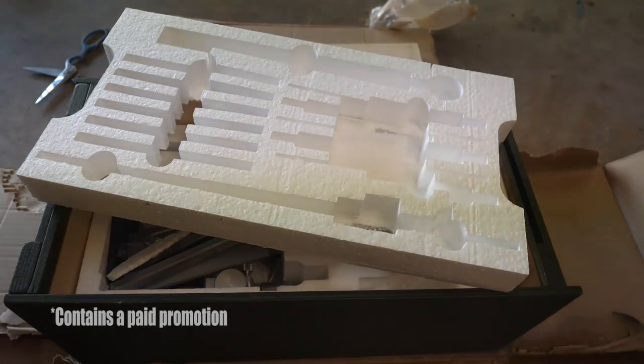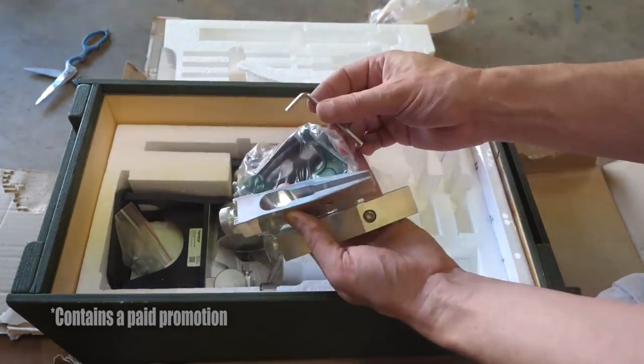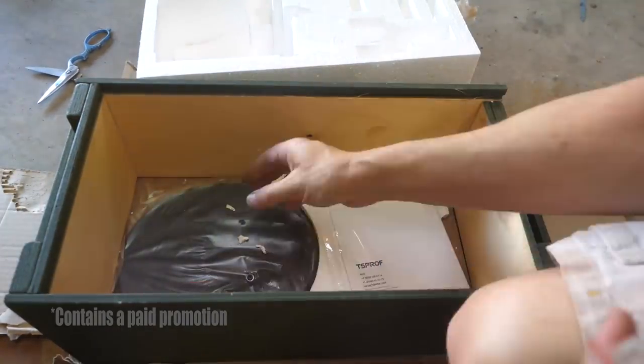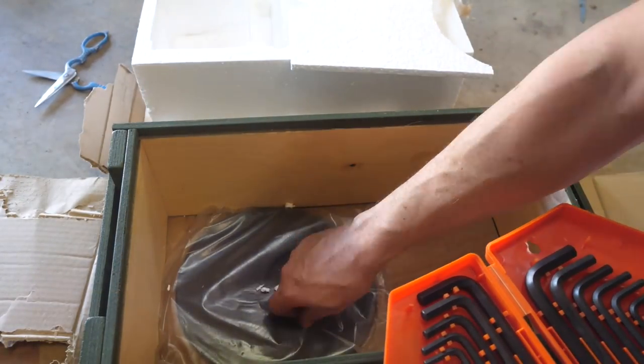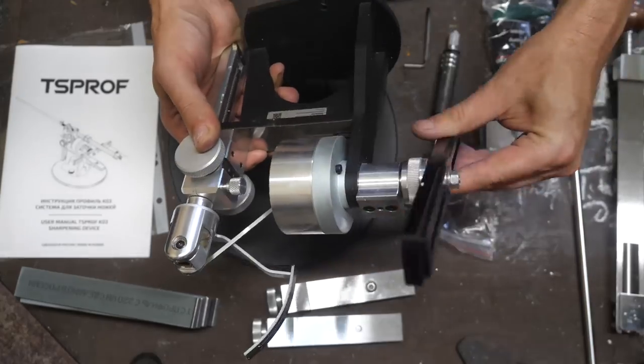It comes in this rustic looking wooden crate that's actually lightweight and can be used to repack, store, and move the system. Mine came with styrofoam packing, which can be reused if cared for, but I think a durable form-fitted open cell foam would have been nicer. Then again, in 10 years, I've only packed or moved my other sharpeners a couple of times each.